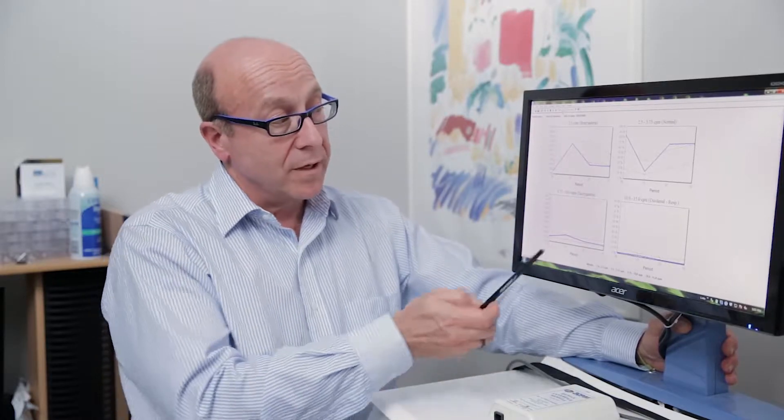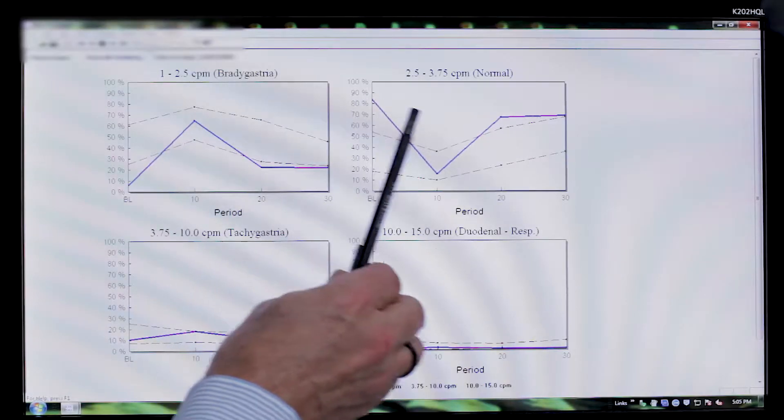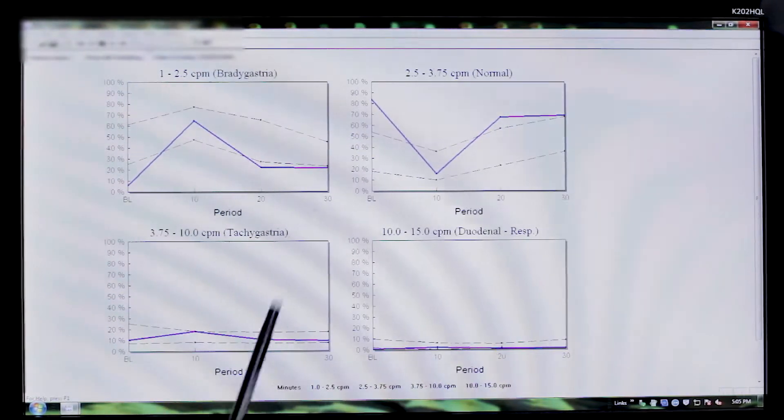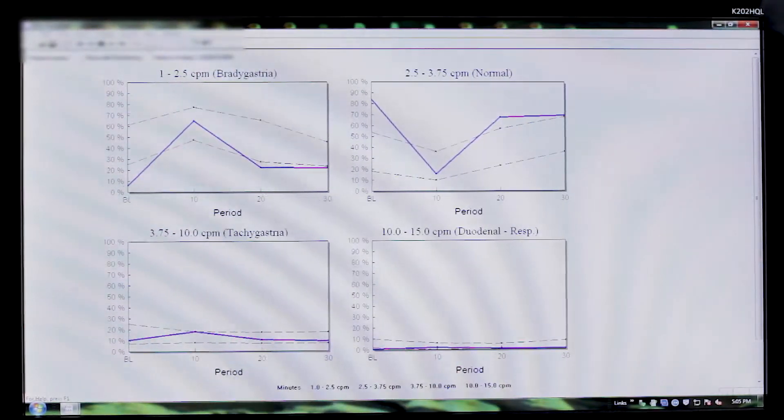But what we see in this particular study is we have above-normal levels, following the water load and even at baseline. And this is very suggestive of functional outlet obstruction. That is my presumptive diagnosis.